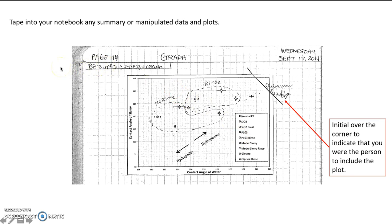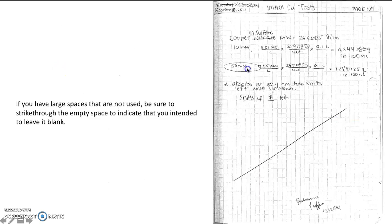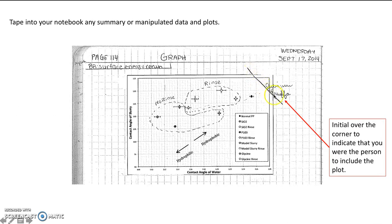Moving into the post lab you should tape into your notebook any summary of manipulated data and plots. Here this student has made a plot, she's taped it in and she's done an excellent job of putting a line across the corner so that if that plot was moved or removed or changed then you would know that something had changed because it wouldn't line up, and she also signed the corner there to say that she was the person that included this plot. She took some notes on top of the plot and she's got really great plot practices here.